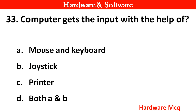Question 31: A computer gets inputs with the help of? Right answer is option D — Both A and B.